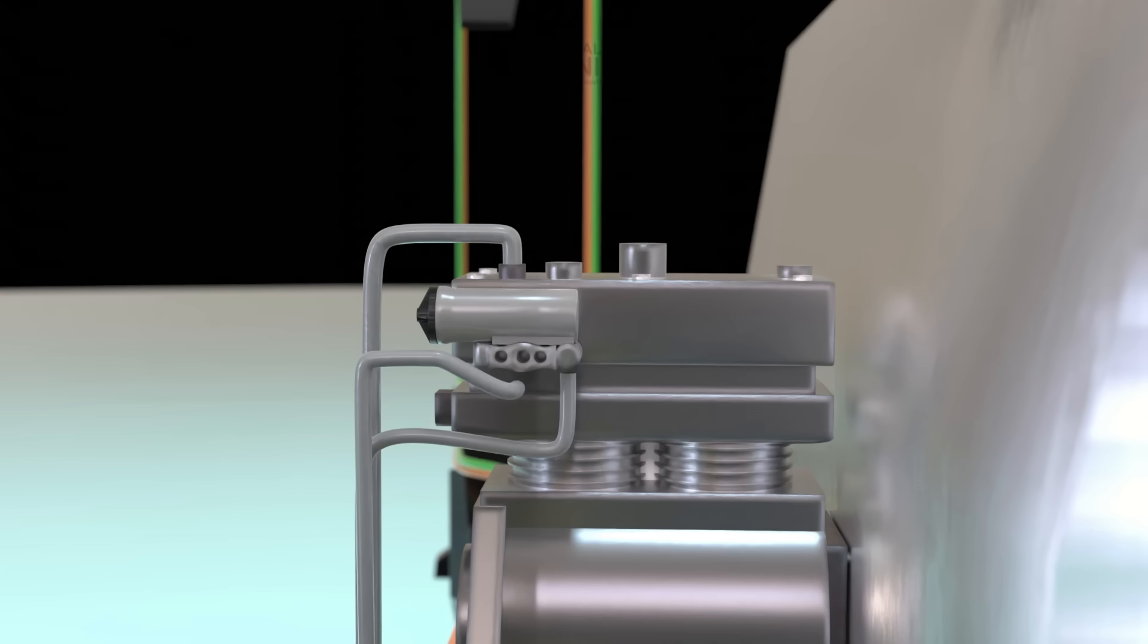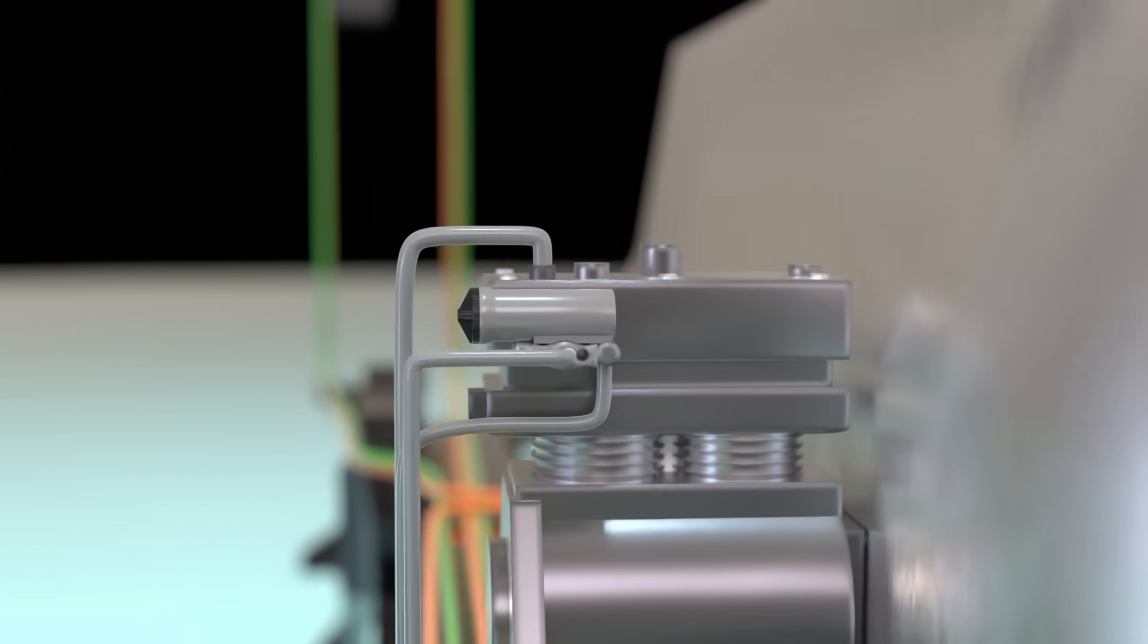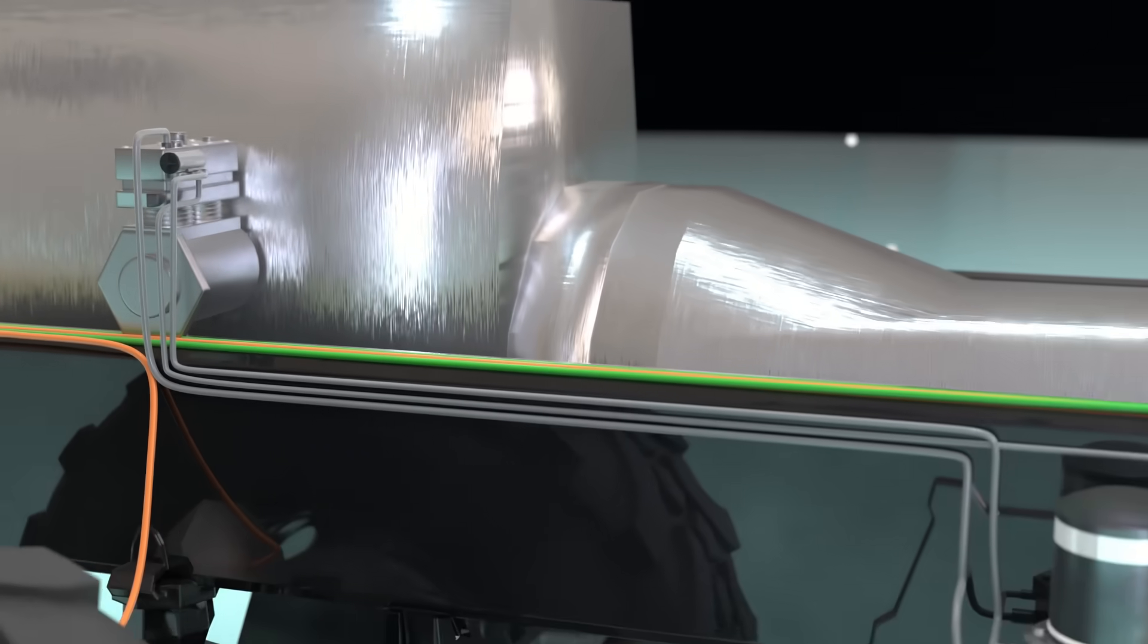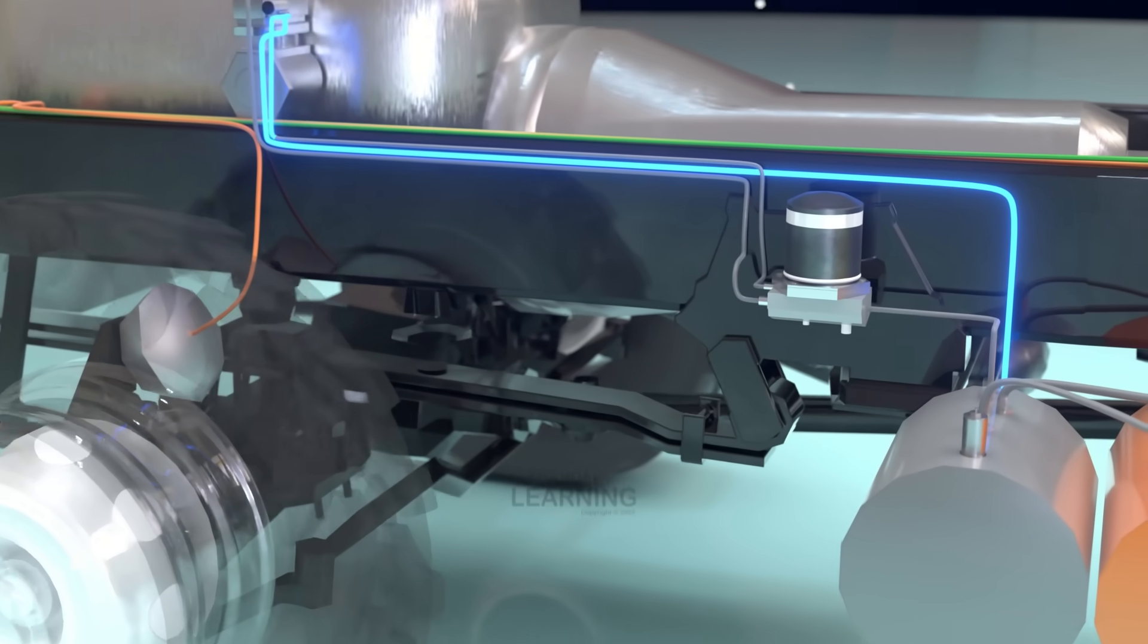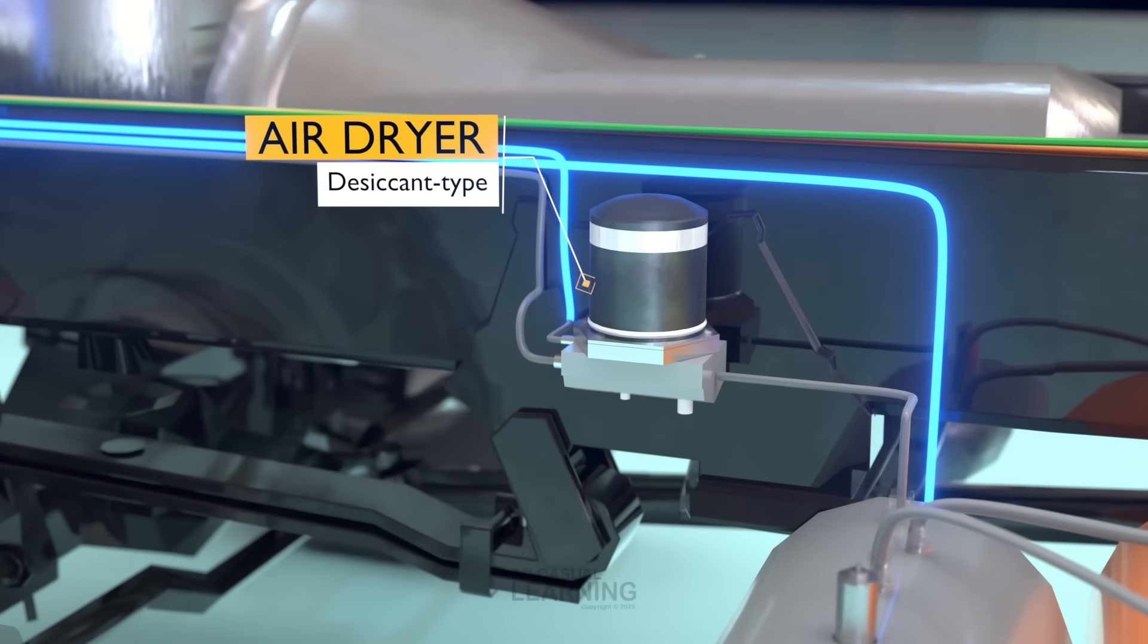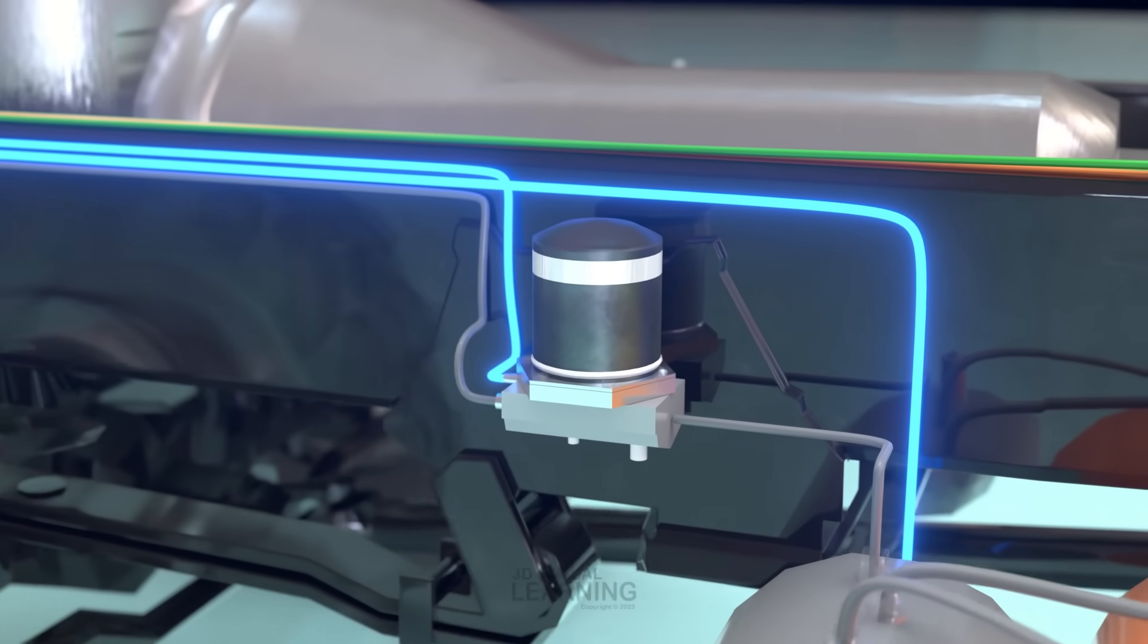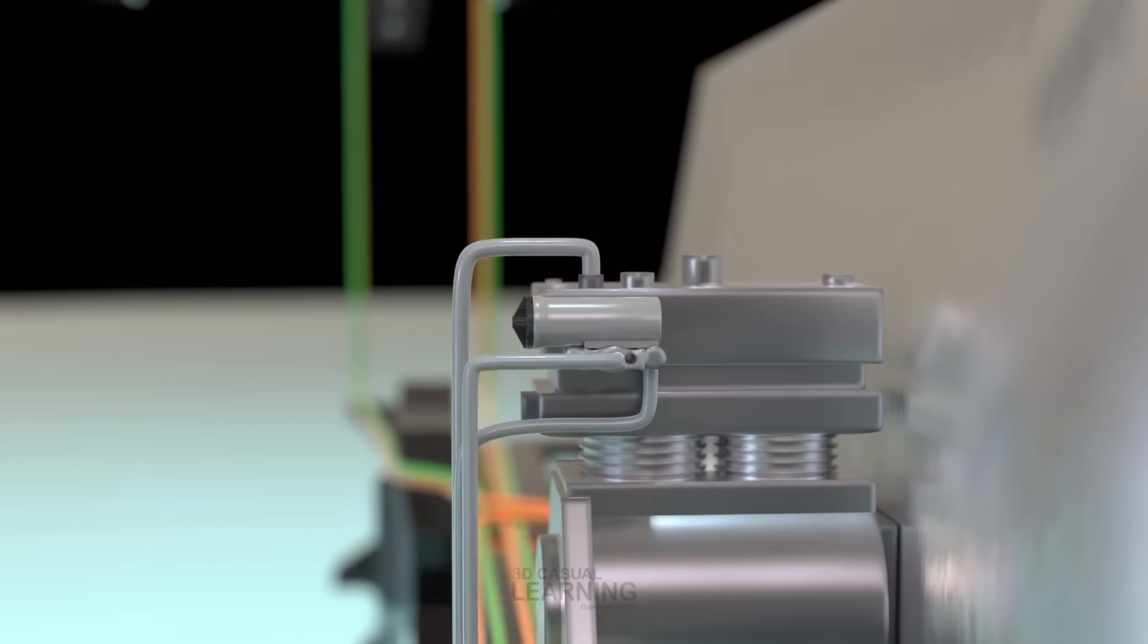It connects to the supply reservoir via an air line, allowing reservoir pressure to enter the governor through its reservoir port. This same pressure also interacts with the air dryer, which we'll cover shortly. But first, let's take a closer look at how the governor actually works.